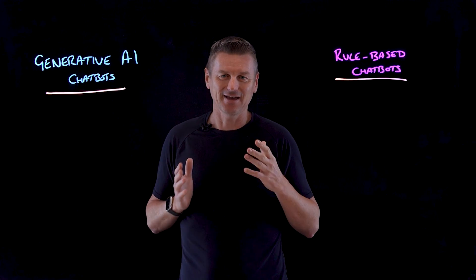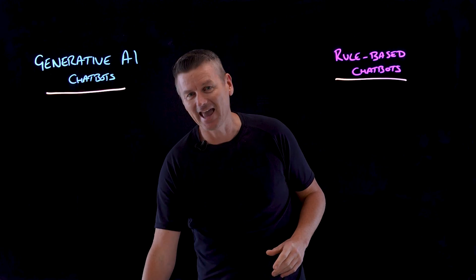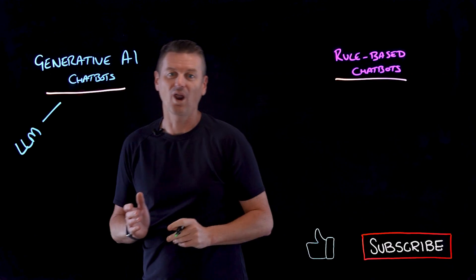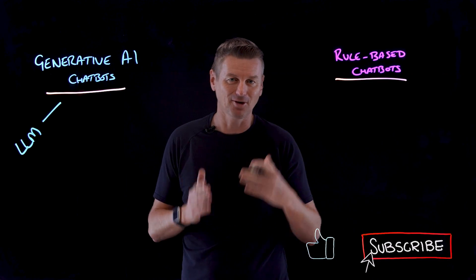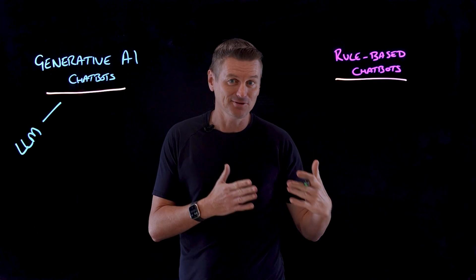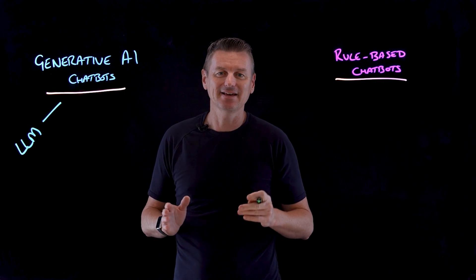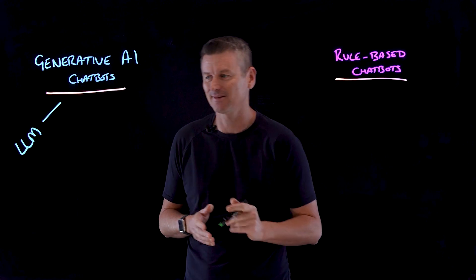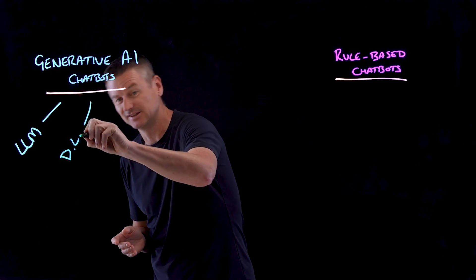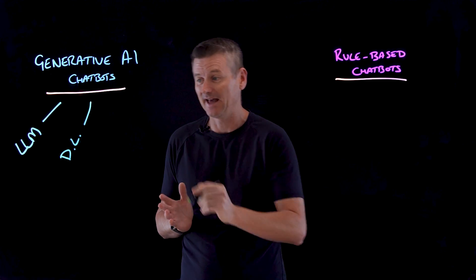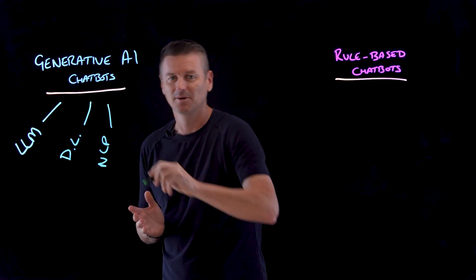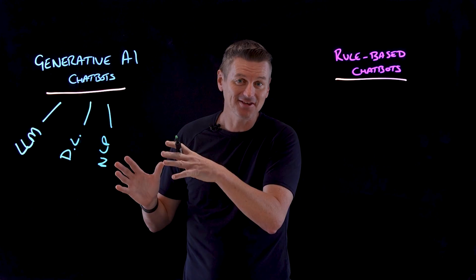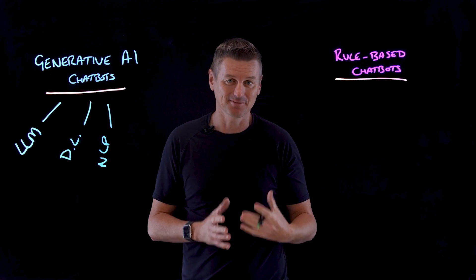Let's begin with a few definitions. Generative AI chatbots utilize LLMs, or large language models, to generate responses based on user inputs. They are trained on massive datasets containing billions of words, phrases, and sentences. These models leverage deep learning models, neural networks, and natural language processing, and these help the chatbot understand and produce human-like responses.